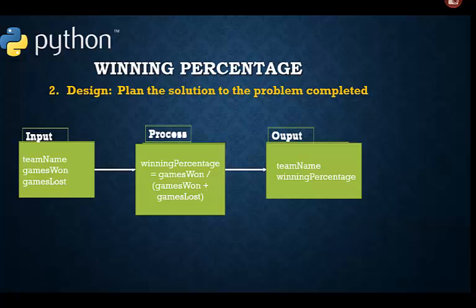Here is our almost complete IPO chart. Let's take the time to consider the data types before we start coding. What do you think the type should be for team name? String, because it's text information. How about games won? Int. Integer would be the best choice since it's a whole number count. Whenever we are counting, we should be using integer type numbers. How about games lost? Yes, that should be integer 2. What about winning percentage? If you said floating point number, that's correct. Percentages are almost always floating point numbers.